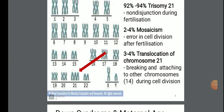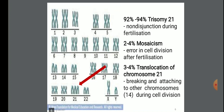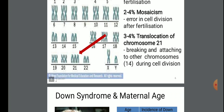This is the chromosomal process. There are a total of 22 chromosomes plus chromosome 21. The genes present on chromosome 21: 92 to 94% is trisomy 21 non-disjunction during fertilization, 2 to 4% mosaicism, and 3 to 4% translocation of chromosome — that is the breaking and attaching to other chromosomes during cell division — which produces Down syndrome.